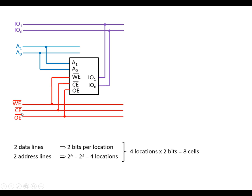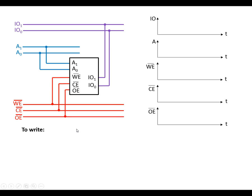There are three control lines: write enable, chip enable, and output enable. Inside the module, to write data we first make sure all control lines are held high. In the timing diagram, if a line shows both high and low simultaneously it means it could be either — and this halfway position indicates the data lines are floating at the moment.